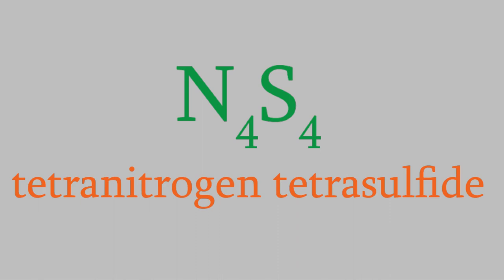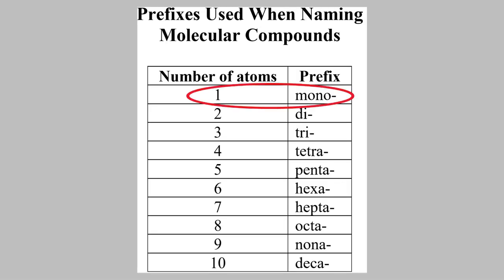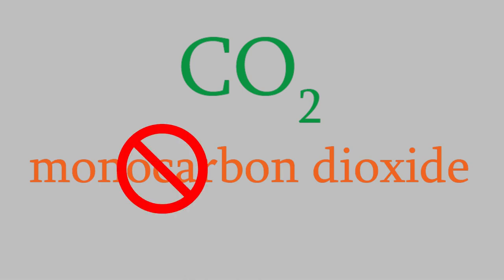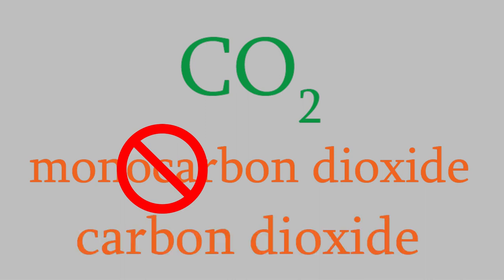The only exception to this rule is when we only have one of the first atom. Take CO2, for example. There's one carbon, which would usually mean we have the prefix of mono. But because carbon is the first element in the name, CO2 isn't called monocarbon dioxide. Instead, we leave the mono off and just call it carbon dioxide.